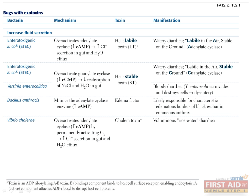Next are bacteria which increase fluid secretion. E. coli heat-labile toxin and cholera toxin both overactivate stimulatory G protein, which activates adenylyl cyclase and increases cAMP production.